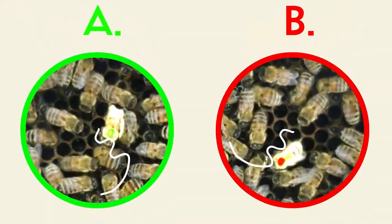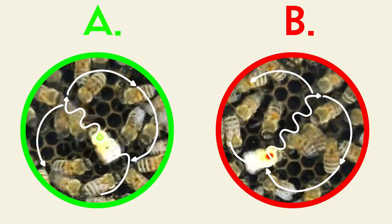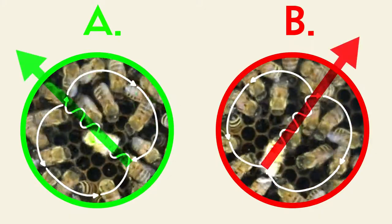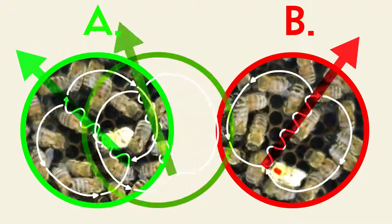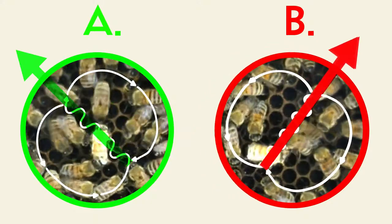While both sets of bees perform the classic figure eight dance, the orientation of the dances is offset between the two groups. Bees returning from one feeder perform a rotated version of the dance done by the other bees.